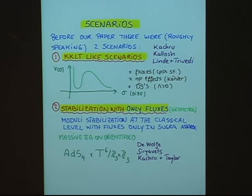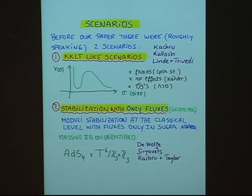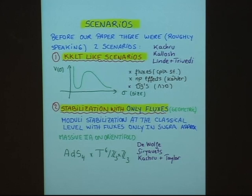Roughly speaking, there have been two scenarios in the literature before our paper. First, there was the KKLT scenario. In this scenario, people consider all possible effects. Fluxes determine the complex structure moduli. Non-perturbative effects determine the Kähler moduli. And D3-branes lift up the vacuum so that we have a nice metastable vacuum. Then there is a second picture where moduli stabilization is achieved by fluxes only. It's a geometric construction based on supergravity — classical stabilization of moduli fields. This approach was developed by the Villadoro collaborators in the context of massive type IIA theory on an orientifold, leading to compactifications to AdS₄.